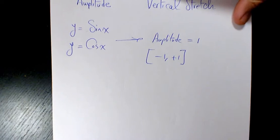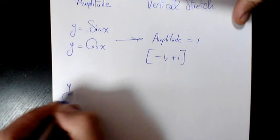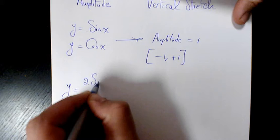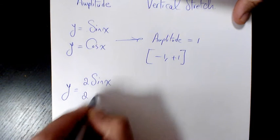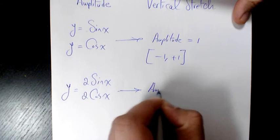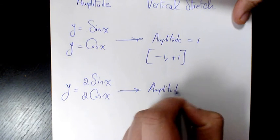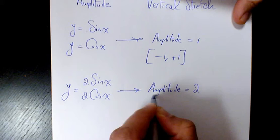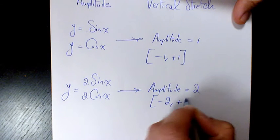Now imagine if you have two sine X or two cosine X. In this case the amplitude is going to be two and range is going to be negative two to positive two, so we have vertical stretch by factor of two.